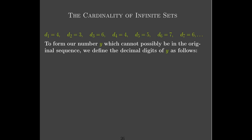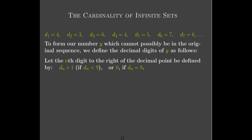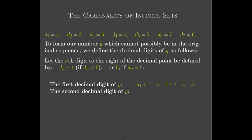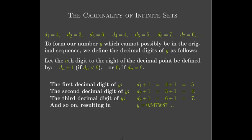Now we're going to construct a new number y which cannot possibly be in that sequence. The way we do it is: we define the decimal digits of y using the following rule. The nth digit to the right of the decimal point of y is d sub n plus 1 if d sub n is less than 9, but if d sub n equals 9, then the nth decimal digit of y is 0. To clarify: our first decimal digit of y would be 4 plus 1, which is 5. The second decimal digit of y is 3 plus 1, which is 4. The third one would be 6 plus 1, which is 7. And then we would have 5, 6, 8, 7, and so on.